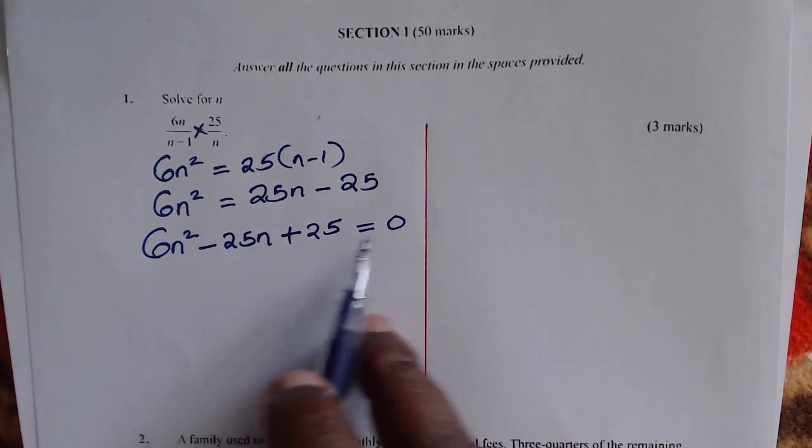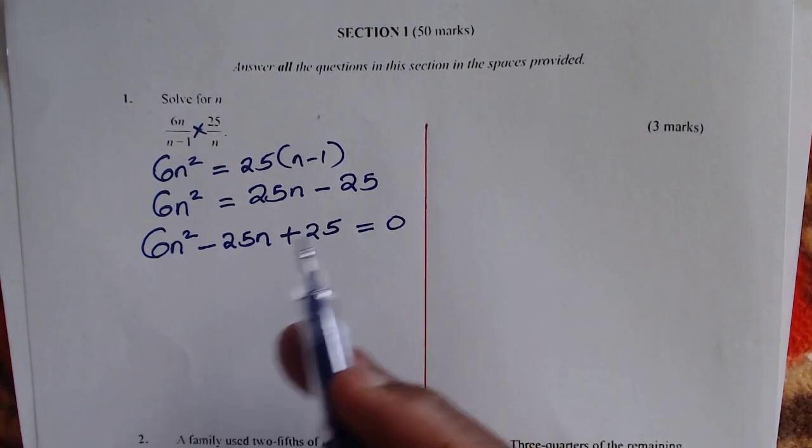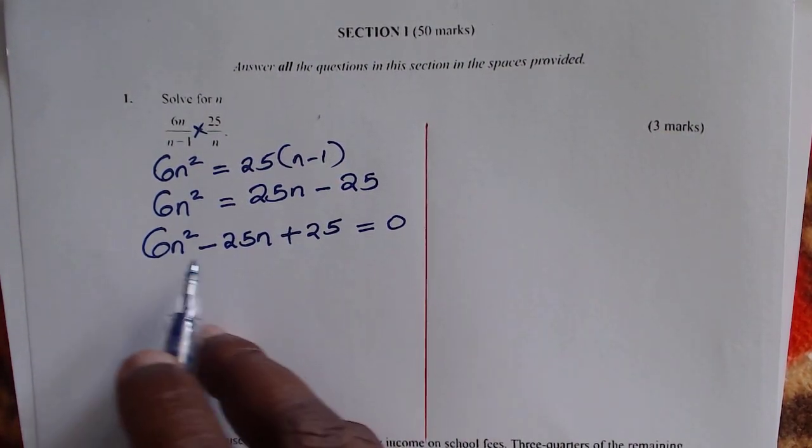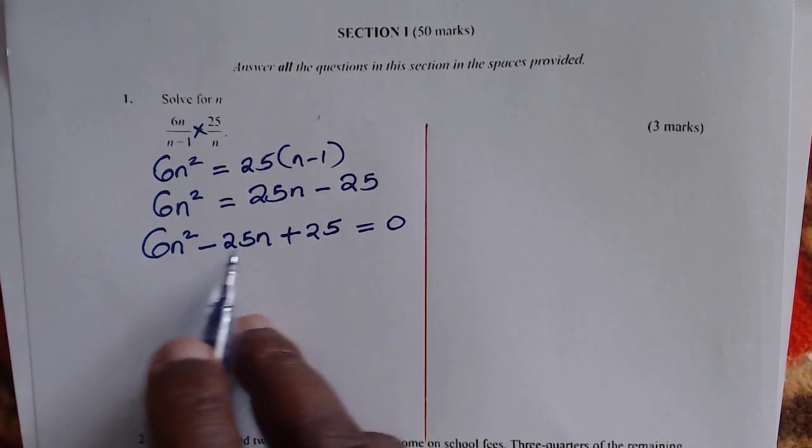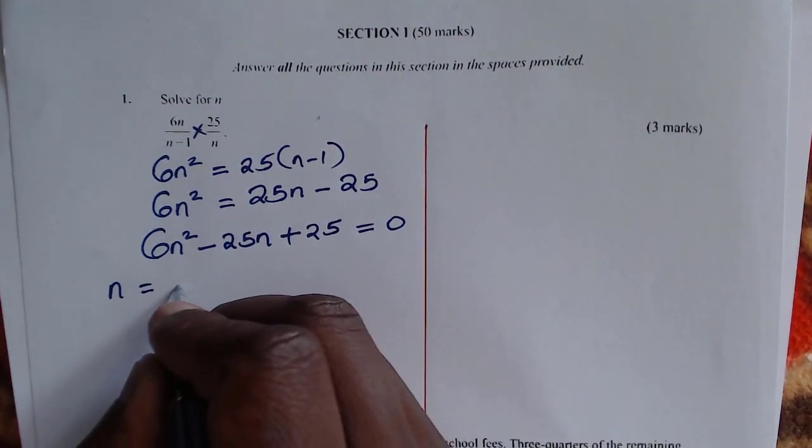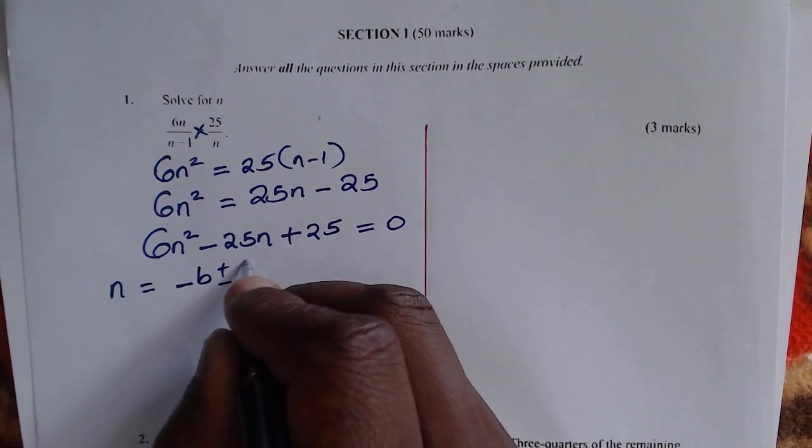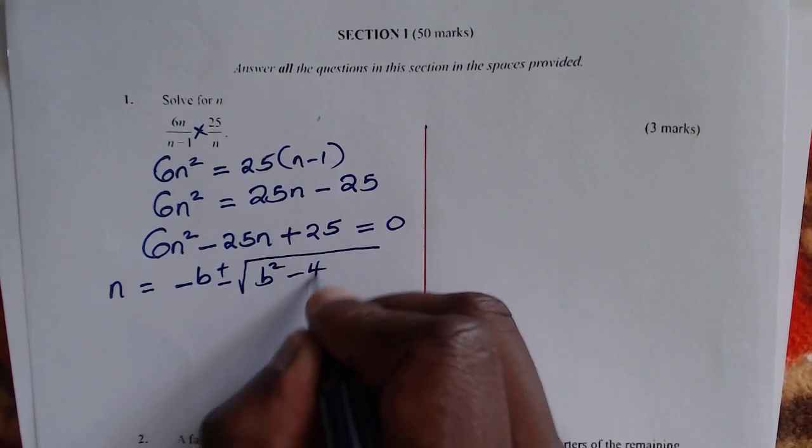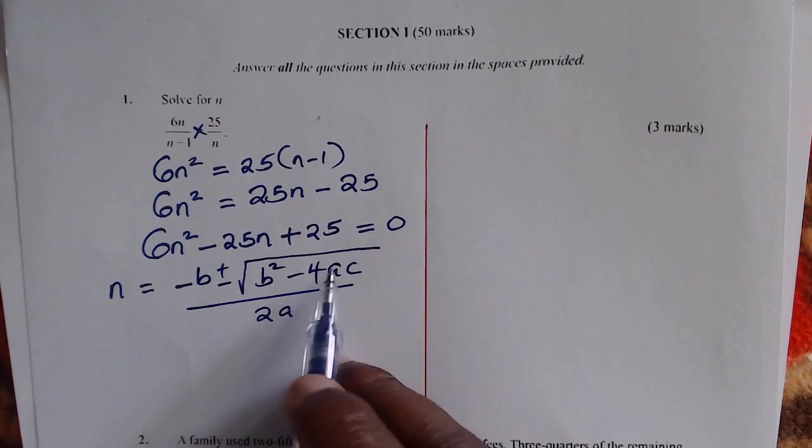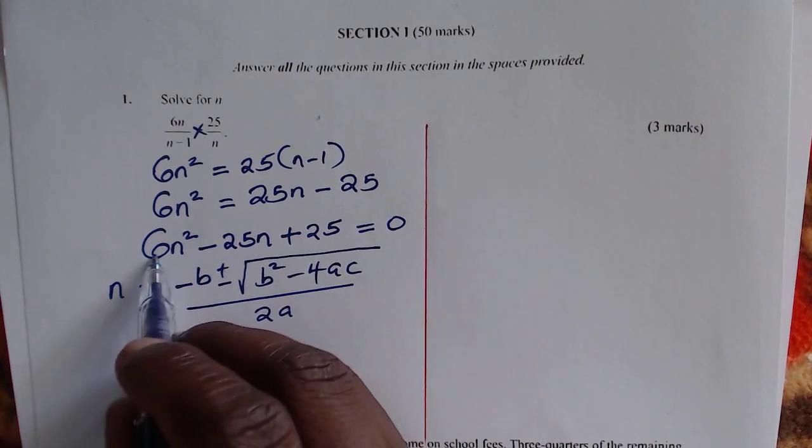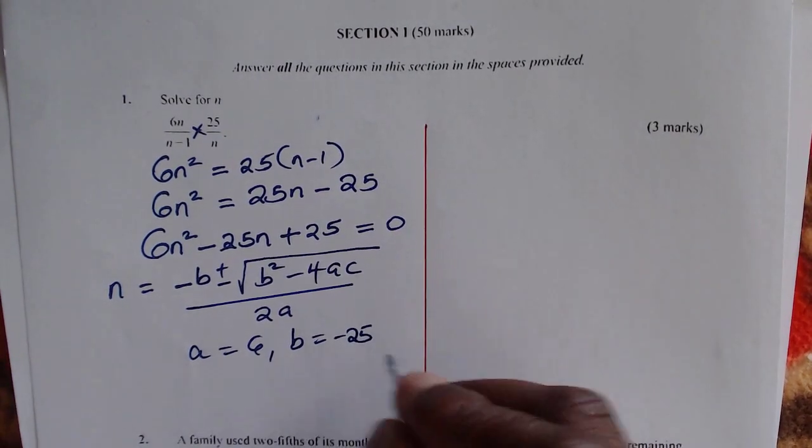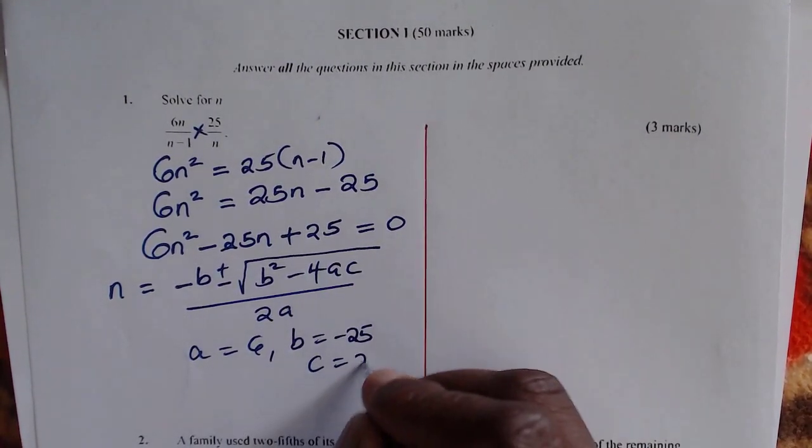There's so many ways of solving quadratic equations. You can use factorization and also you can use the quadratic formula. So I'll go with the quadratic formula. Now since you cannot simplify this further, 6, 25 and 25, we don't have a common factor. So the quadratic formula will be given by negative b plus or minus b squared minus 4ac divided by 2a. Now you identify a, b, and c. So a, in this question will be 6, b will be negative 25, and c will be positive 25.